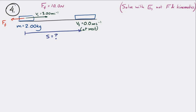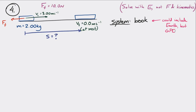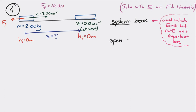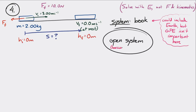Let's make the system the box. We don't have to worry about the Earth in this situation because there's no gravitational potential energy change — the height is always going to be zero. So we have an open system, because the friction force is going to remove energy from the box. If it's an open system, then EI plus work equals EF.